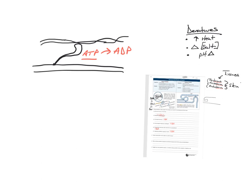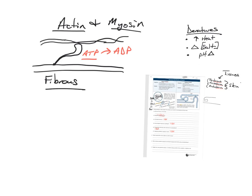All your muscles do is contract or release — they don't push, they just pull. When your tricep contracts, your arm moves one direction; when your bicep contracts, your arm moves the other direction. These proteins — actin and myosin — are also fibrous. They do cross-bridging, and it's this ATP-powered energy use that allows you to move, lets your heart beat, lets you have bowel movements, walk, blink, and breathe.